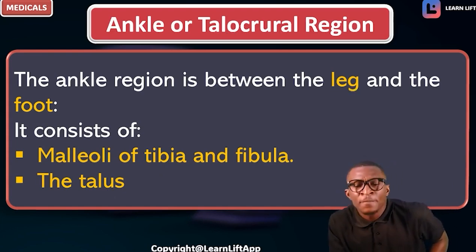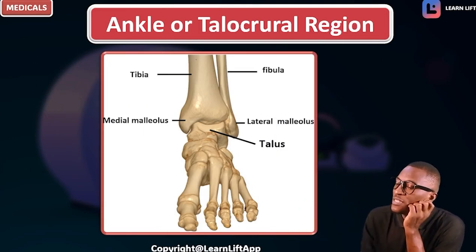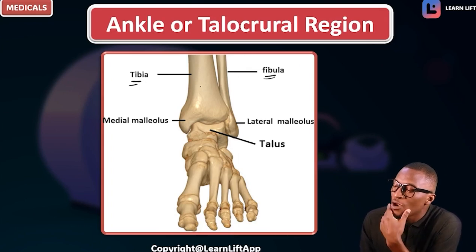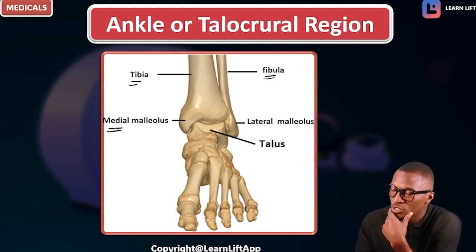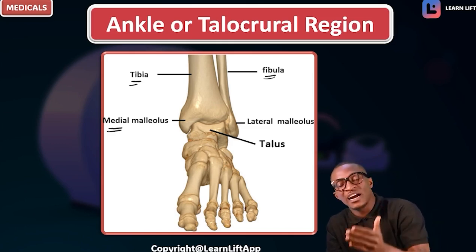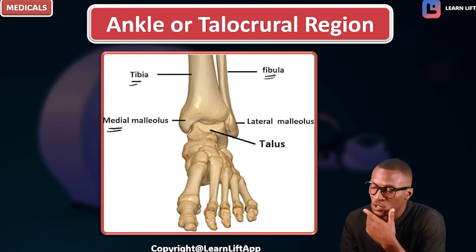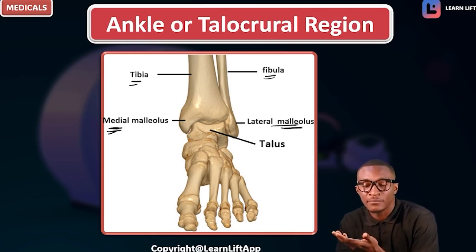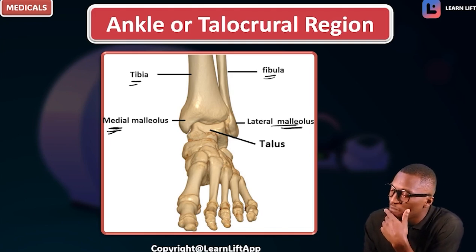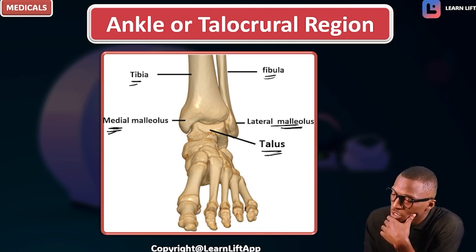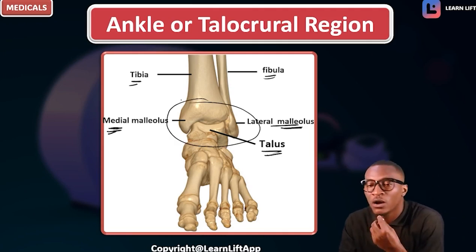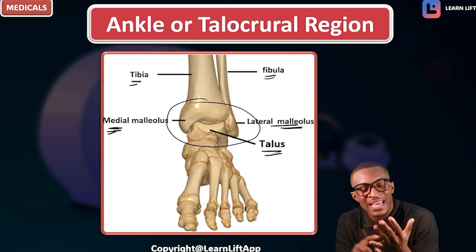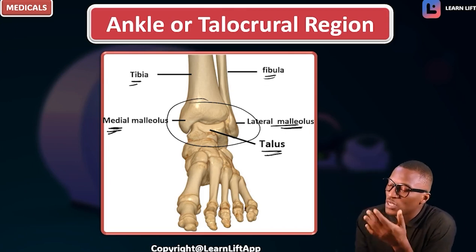Looking at the diagram: the tibia has a malleolus at its lower end — called the medial malleolus. In the upper part of the tibia we use the word condyle, but at the lower part we use the word malleolus. So we have the medial malleolus from the tibia and the lateral malleolus from the fibula. The talus bone comes from the foot. Together — the malleoli of the tibia and fibula, plus the talus bone — they form the ankle joint.